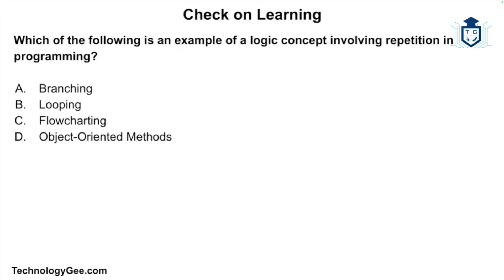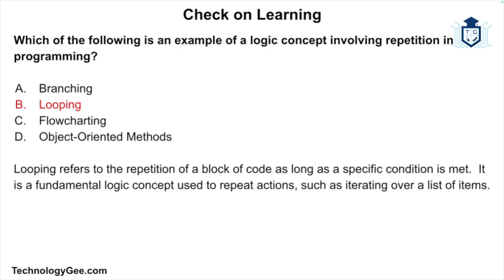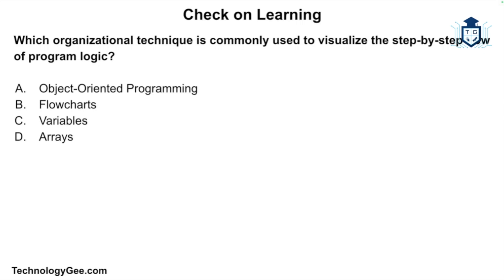Next question: which of the following is an example of a logic concept involving repetition in programming — branching, looping, flowcharting, or object-oriented methods? The correct answer is looping. Looping refers to the repetition of a block of code as long as a specific condition is met. It is a fundamental logic concept used to repeat actions such as iterating over a list of items.